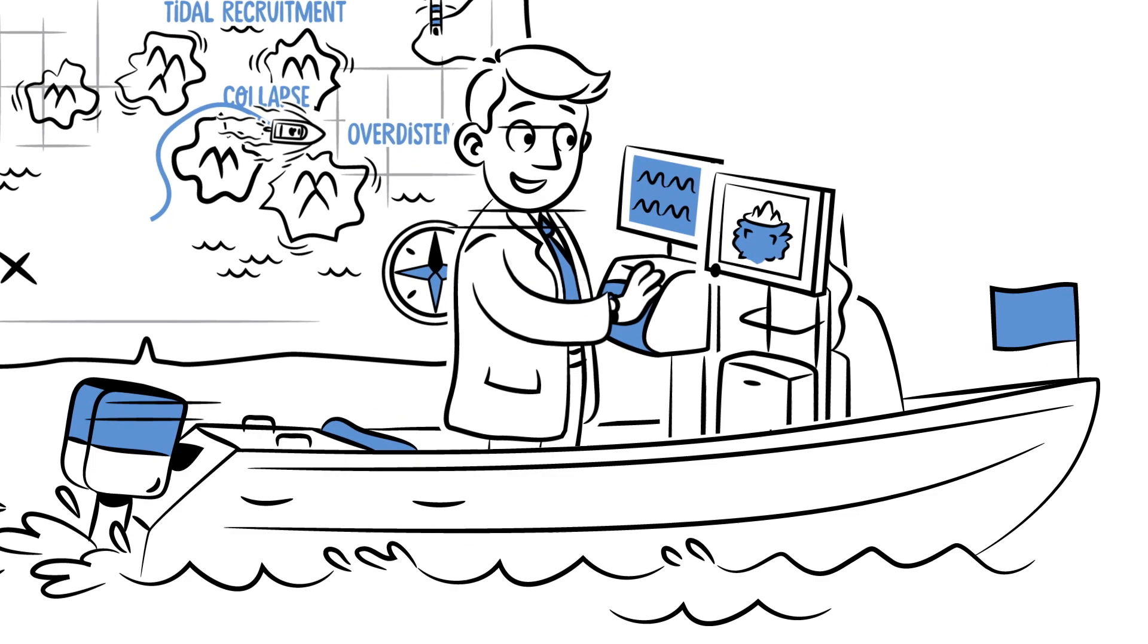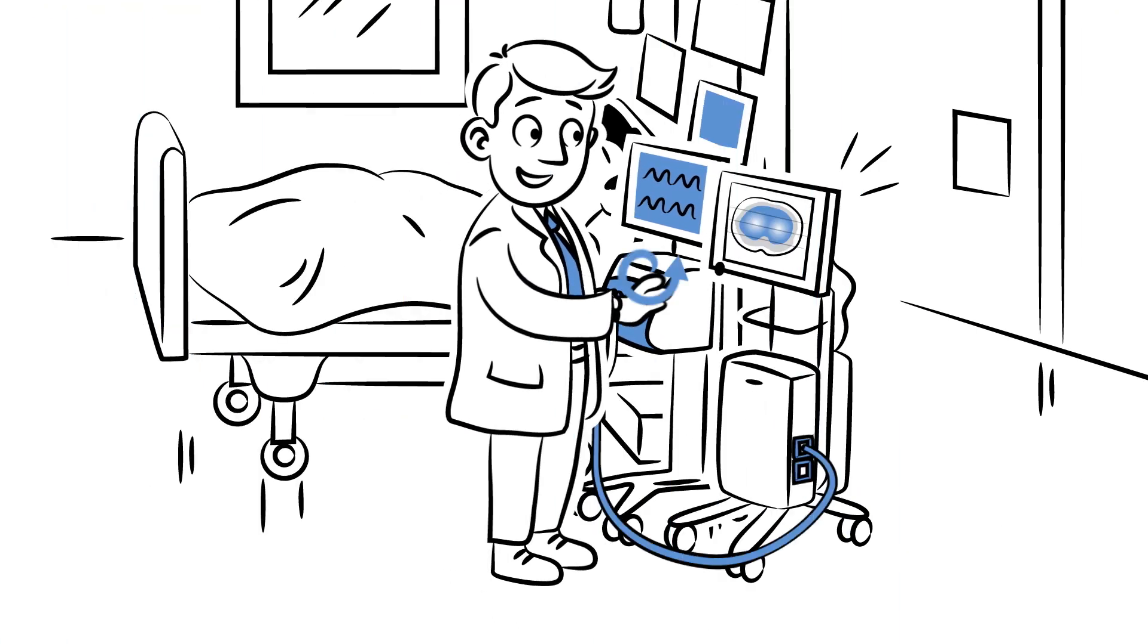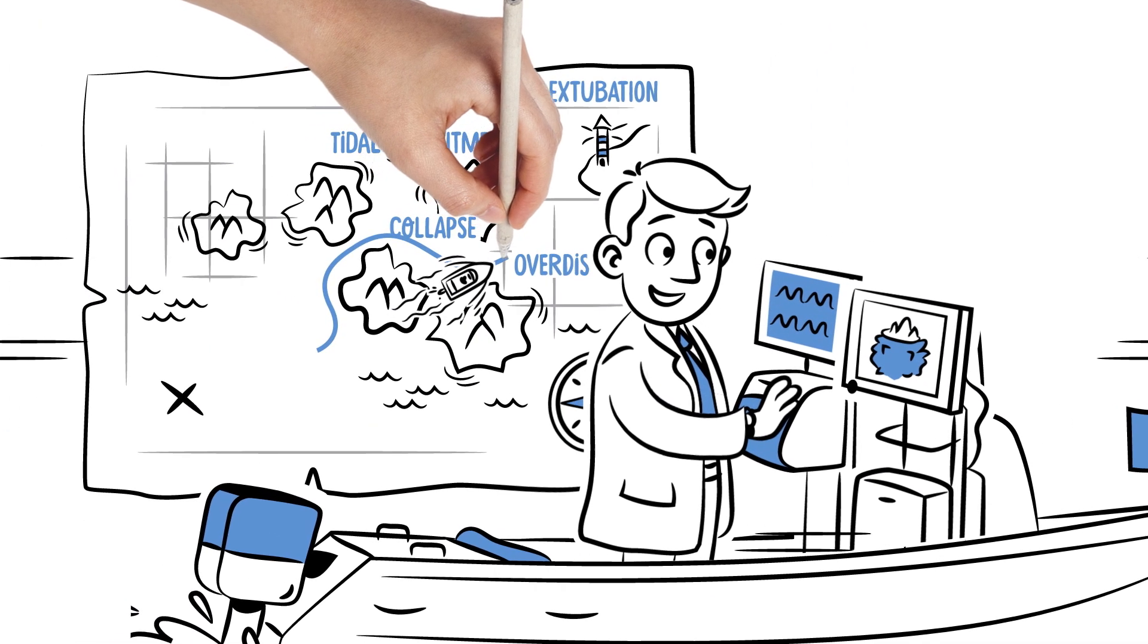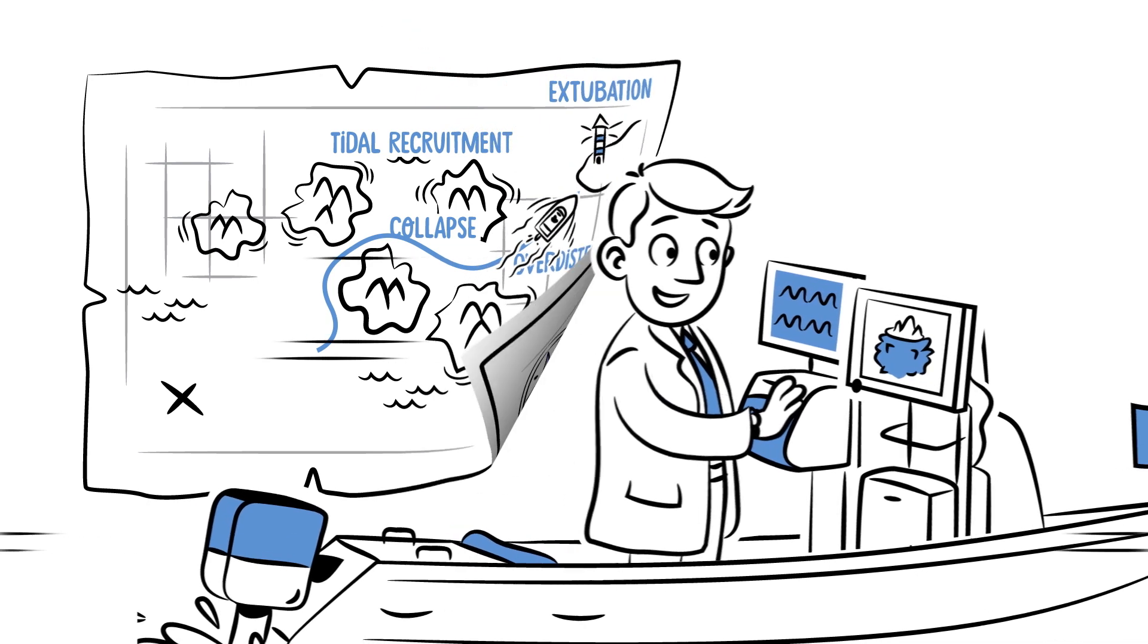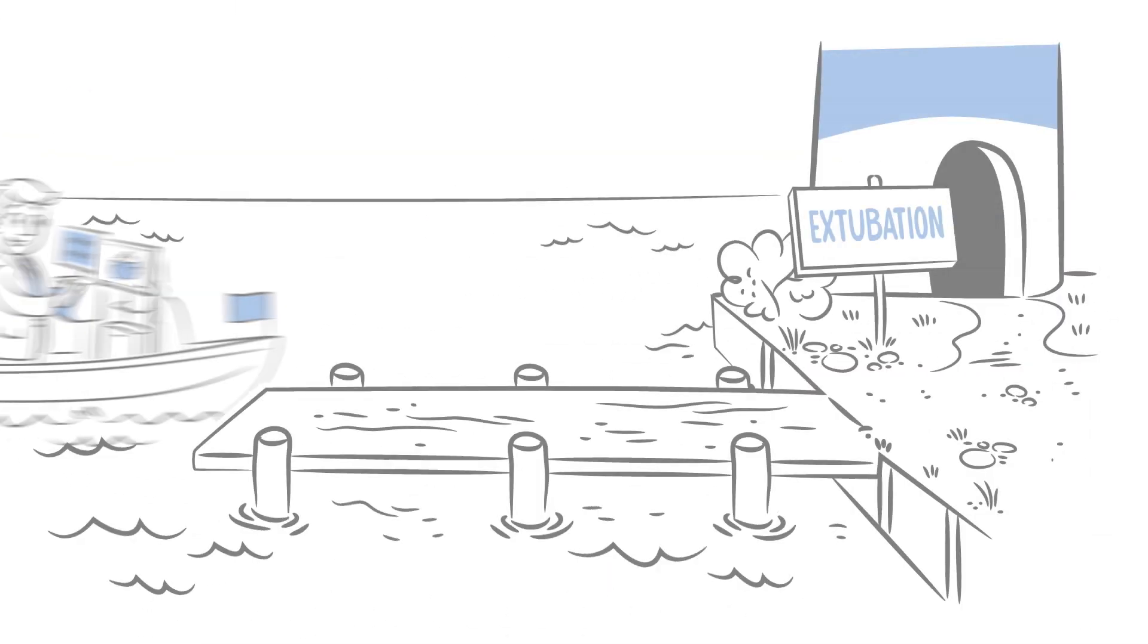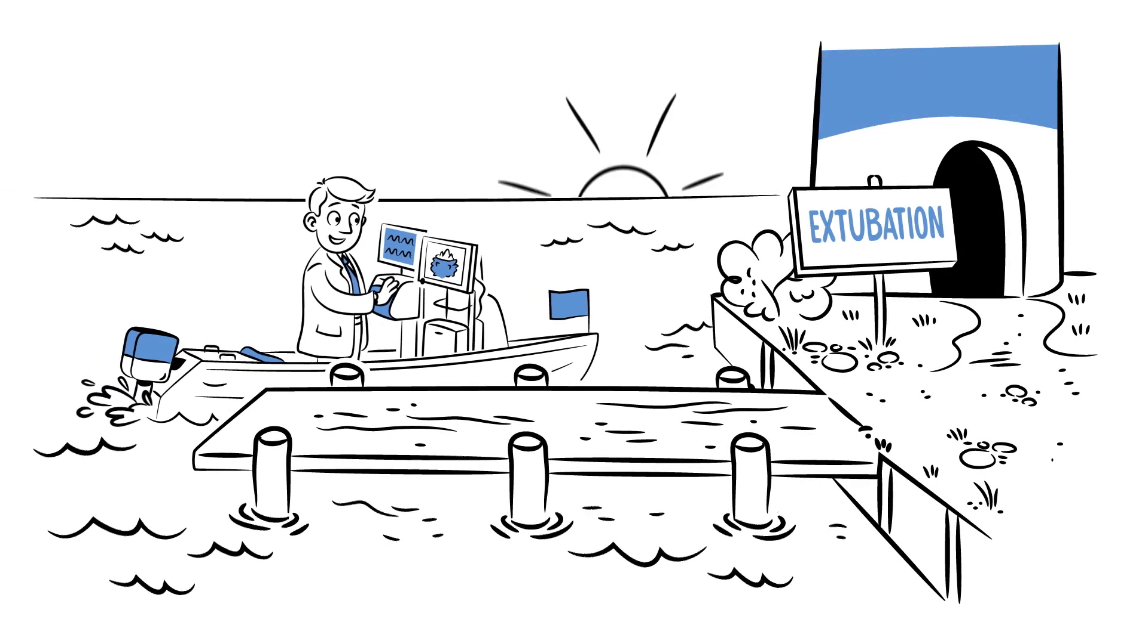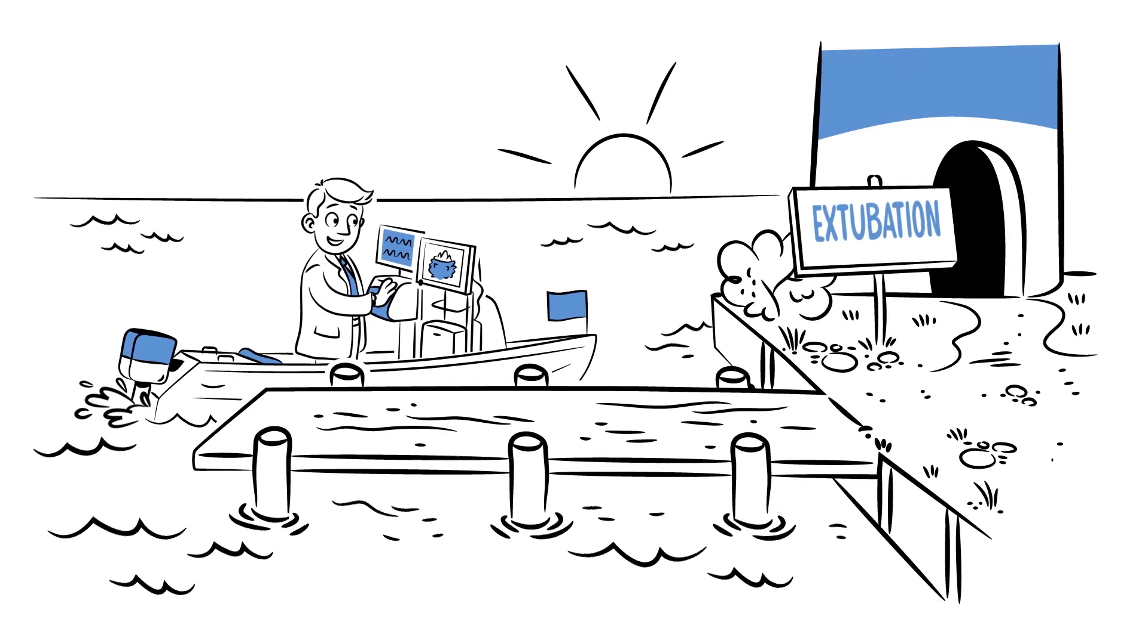A lung-protective ventilation strategy aims at minimizing stress and strain within the lung. Image-guided ventilation therapy allows you to see over-distention and collapse in real-time and to set the right course for our patient. In this way, the safe harbor is reached while protecting the lung.